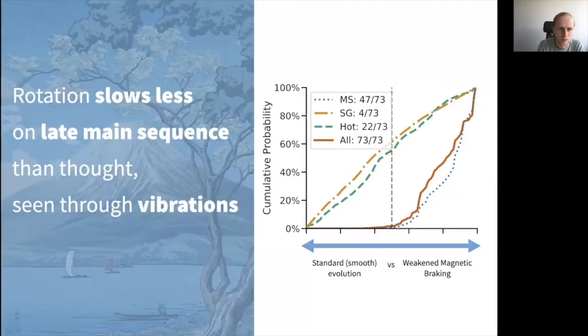Hey everyone, my name is Oliver Hall and my haiku is: rotation slows less on late main sequence than thought, seen through vibrations. Stars on the main sequence lose angular momentum as they age, and the rate at which they lose angular momentum is tied to their color. So if you know a star's color and its rotation rate, you know its age. However, this so-called gyrochronology relation seems to break down past the middle of the main sequence age, and this has been seen using rotation rates from spots in field stars.